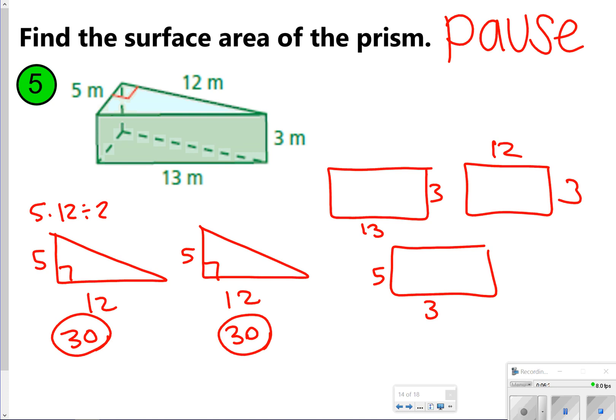5 times 12 divided by 2 is going to give me 30 for each of these triangles. And then for my rectangles, the 13 by 3 is 39, 12 by 3 is 36, and then 5 by 3 is 15. So all I've got to do now is just take my calculator and add these together. 30 and 30 plus 39 plus 36 plus 15 is going to give me 150 meters squared. How did you do?